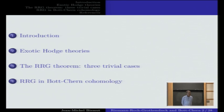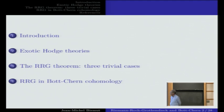My talk will be organized as follows. First, I will give a short introduction. Then I will explain what exotic Hodge theories are from the analytic point of view. Then I will review the Riemann-Roch-Grothendieck theorem, essentially in three trivial cases. And finally, I will try to explain what the proof consists of.